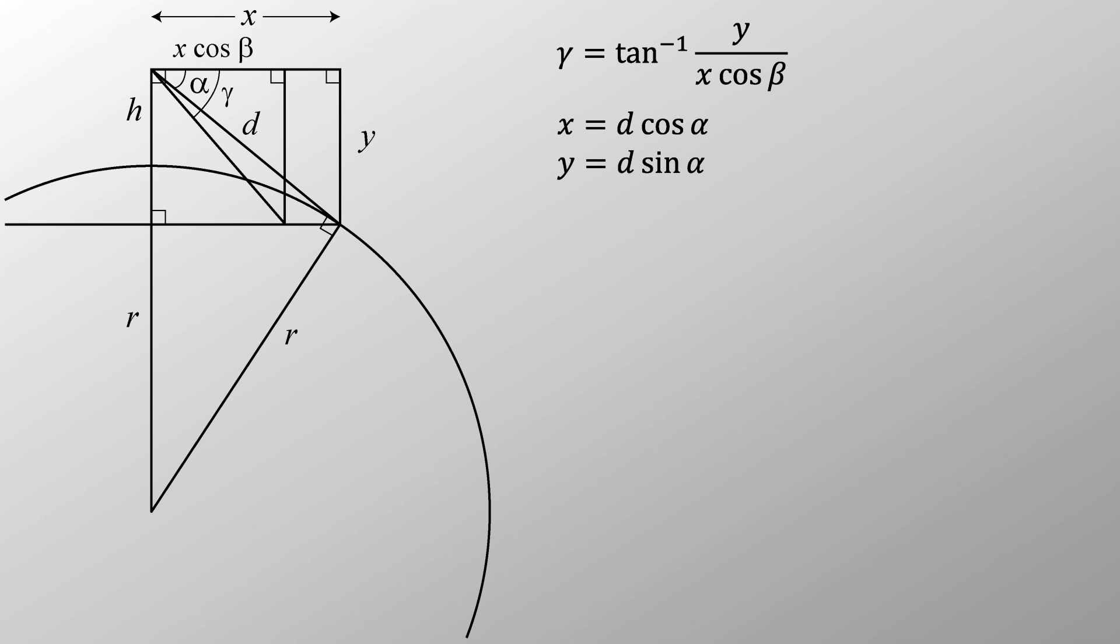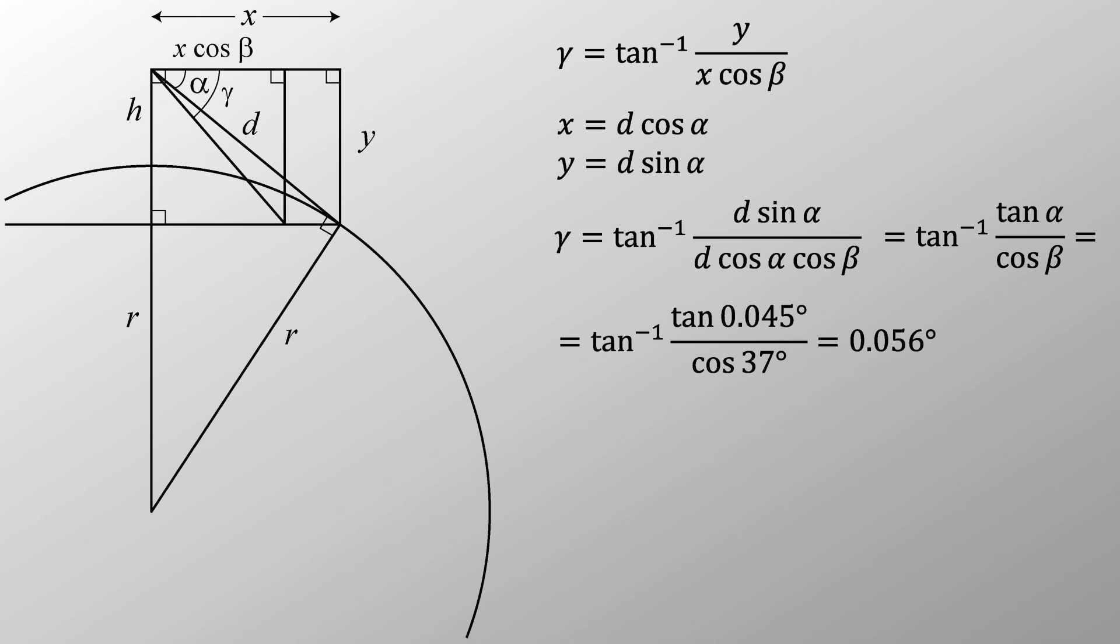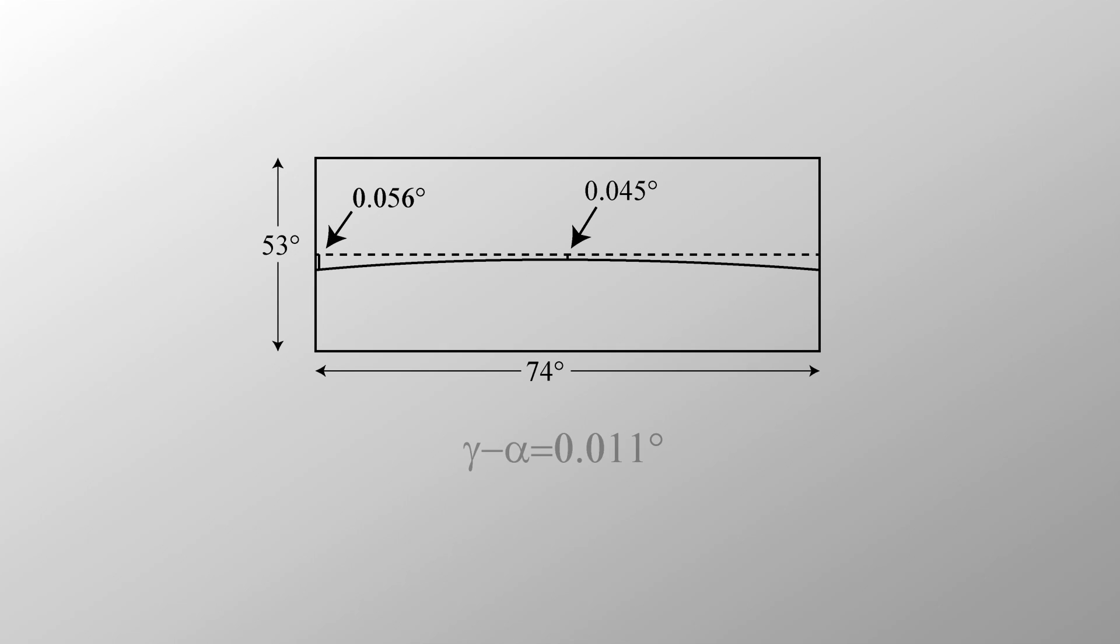x is d cosine alpha and y is d sine alpha, so we get, well, this, which simplifies to this. Plugging in alpha from before and beta equals 37 degrees, half of 74, this comes to 0.056 degrees. So the difference between alpha and gamma is 0.011 degrees.